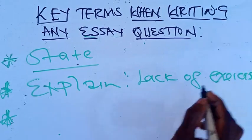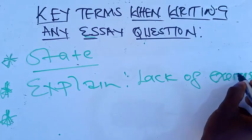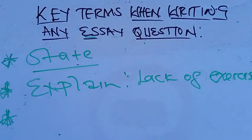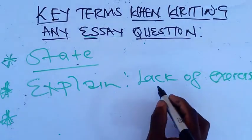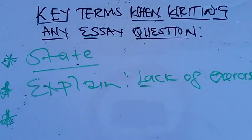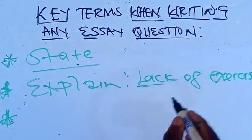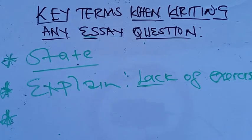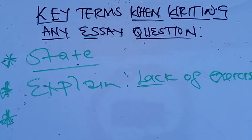So now, when talking about explaining, you need to give the point — lack of exercise — and then you tell them how lack of exercise actually leads to coronary heart disease, or how lack of exercise actually causes coronary heart disease. That's when you can say you are explaining. So that is what it means to explain: you give the point, and then you give the reason for that point.